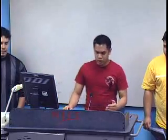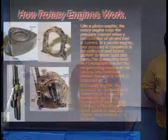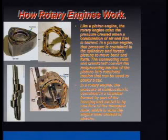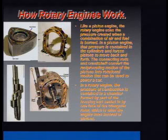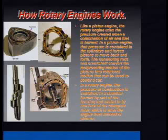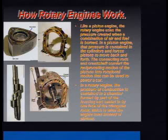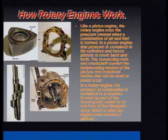Like a piston engine, the rotary engine uses the pressure created when a combination of air and fuel is burned. In a piston engine, that pressure is contained in the cylinders and forces pistons to move back and forth. The connecting rods and crankshaft convert the reciprocating motion of the pistons into a rotational motion that can be used to power a car. In a rotary engine, the pressure of combustion is contained in a chamber formed by part of the housing and sealed in one face of the triangular rotor, which is what the engine uses instead of pistons.